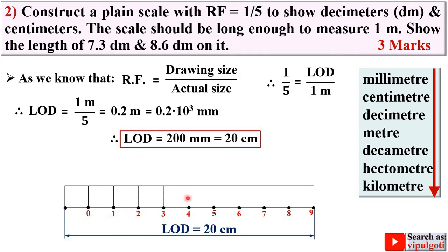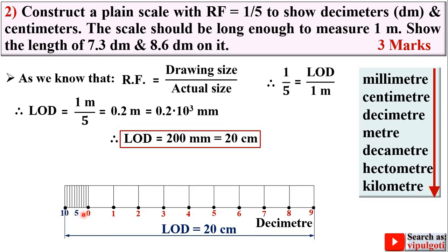Draw vertical lines passing through all the points using a roller scale. All these divisions represent 1 decimeter each, so write decimeter as the unit label. Now divide the first division into 10 equal parts — always do this for a plane scale. Label it 0, 5, and 10. Each small division represents 1 centimeter, because decimeter divided by 10 gives centimeter. Write centimeter as the label for this subdivision.